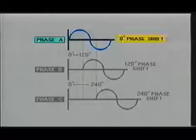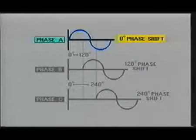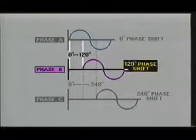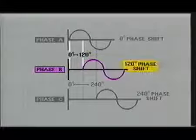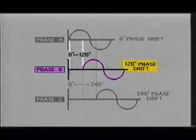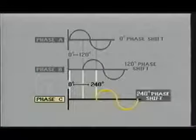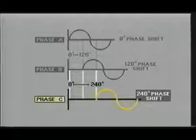Notice that phase A starts at the zero degree point and completes its cycle at 360 degrees. Now notice that phase B starts 120 degrees from the phase A sine wave and completes its cycle at 480 degrees. Phase C, on the other hand, starts 240 degrees from phase A and completes its cycle 600 degrees from the start of phase A.